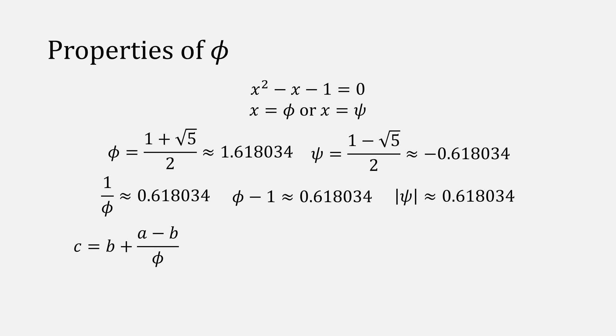If we take our equation for C, and instead of doing division, replace that with 1 over the golden ratio, we can rewrite it to be the golden ratio minus 1. You can use the golden ratio minus 1 to avoid a lot of division.